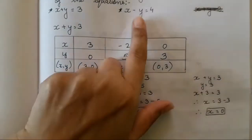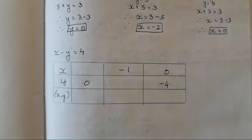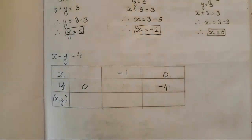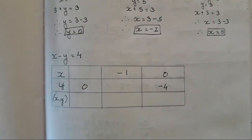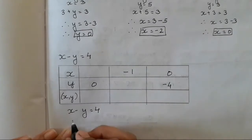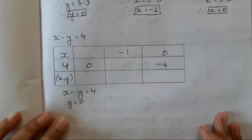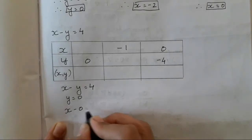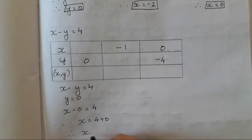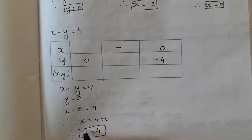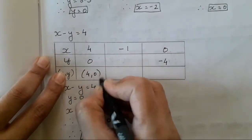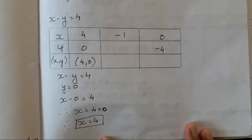Now the next question has a different kind of table — only 2 entries are to be solved; the third one is already done. For the equation x minus y is equal to 4, where y is equal to 0: x minus 0 is equal to 4, therefore x is equal to 4. So the pair is (4, 0).